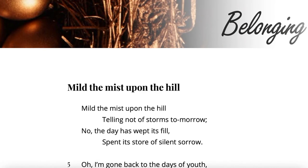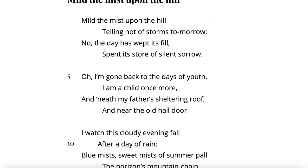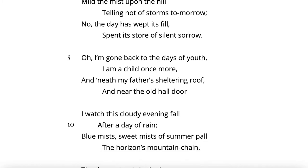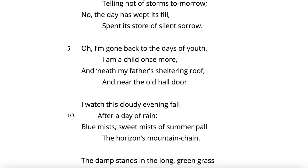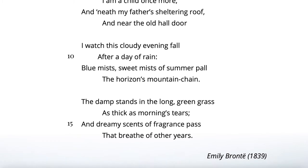Let's read the poem, 'Mild the Mist Upon the Hill': Mild the mist upon the hill, telling not of storms tomorrow, no, the day has wept its fill, spent its store of silent sorrow. Oh, I'm gone back to the days of youth, I am a child once more, and 'neath my father's sheltering roof and ne'er the old hall door. I'll watch this cloudy evening fall after a day of rain, blue mists, sweet mists of summer pool, the horizon's mountain chain. The damp stands and the long green grass as thick as morning tears, and dreamy scents of fragrance pass that breathe of other years.